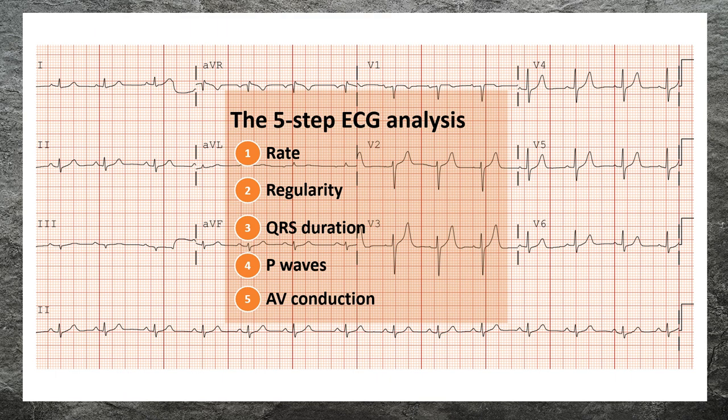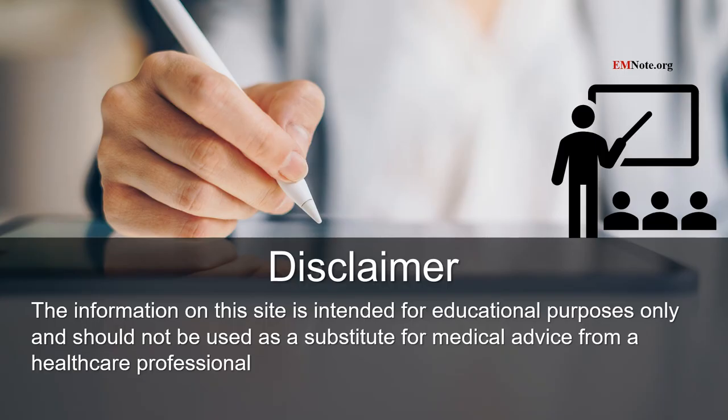In conclusion, the five-step ECG analysis consists of: one, determine the rate of the rhythm; two, determine the regularity of the rhythm; three, determine the QRS duration; four, determine the presence of P waves; five, determine AV conduction.